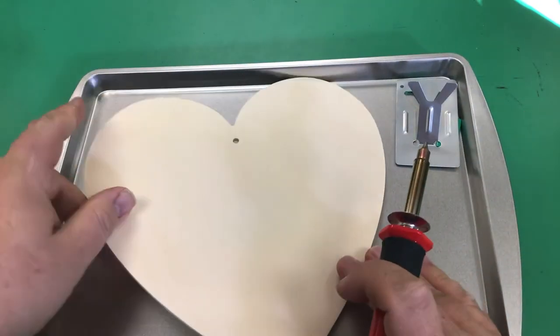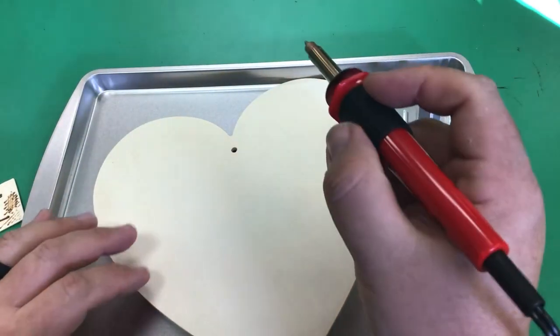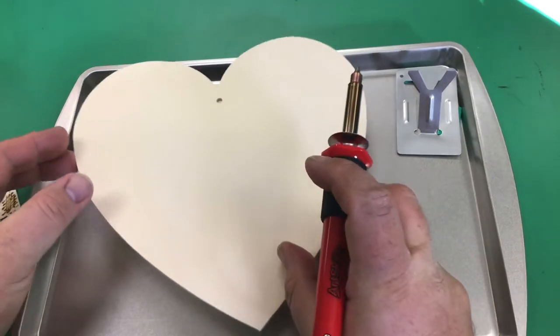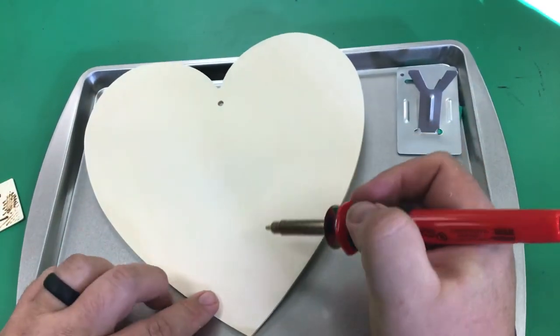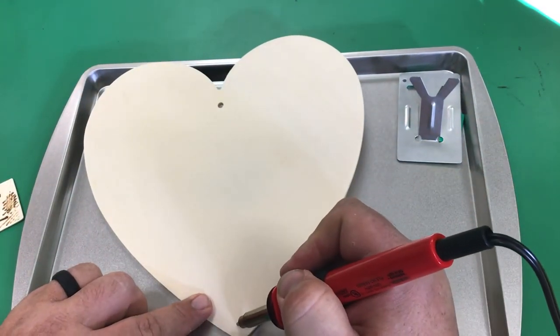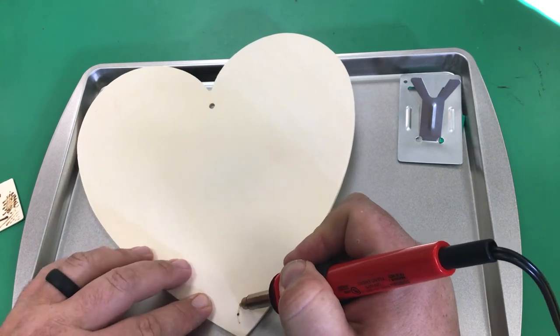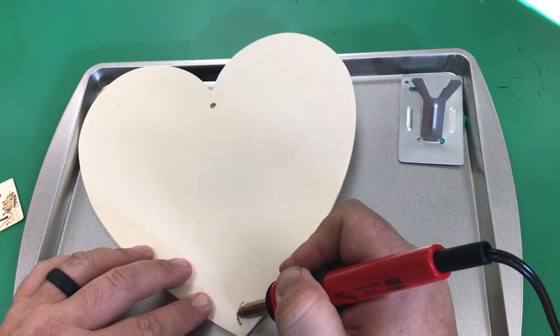This is a heart I got at Dollar Tree. Hopefully it's not full of formaldehyde. Let's try this. Now this is a thicker piece of wood.